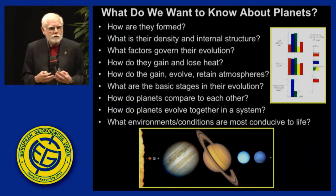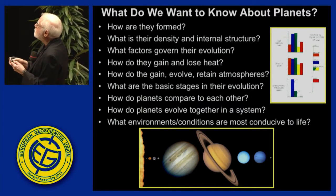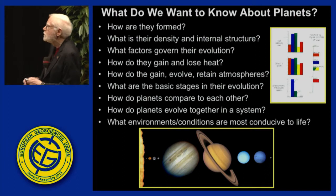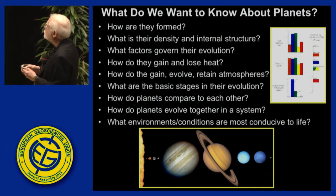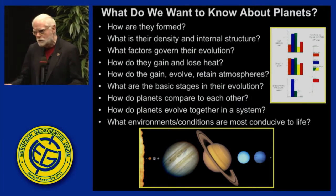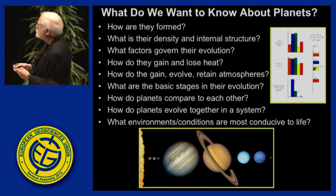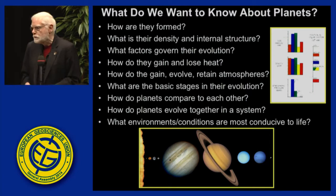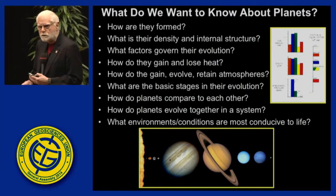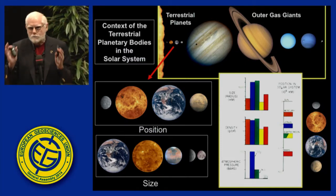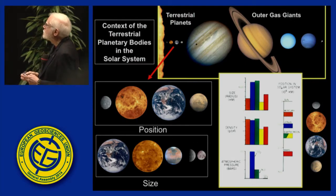These are the very simple and very fundamental questions we ask: How do planets form? What's their density and internal structure? What factors govern their evolution? How do they gain and lose heat? How do they evolve and retain atmospheres? What are the basic stages in their evolution? What environments and conditions are most conducive to life — the origin of life, evolution of life, preservation of life? These are the kinds of things that compel all of us in comparative planetology. I want to summarize some of the findings of the last 57 years of exploration.